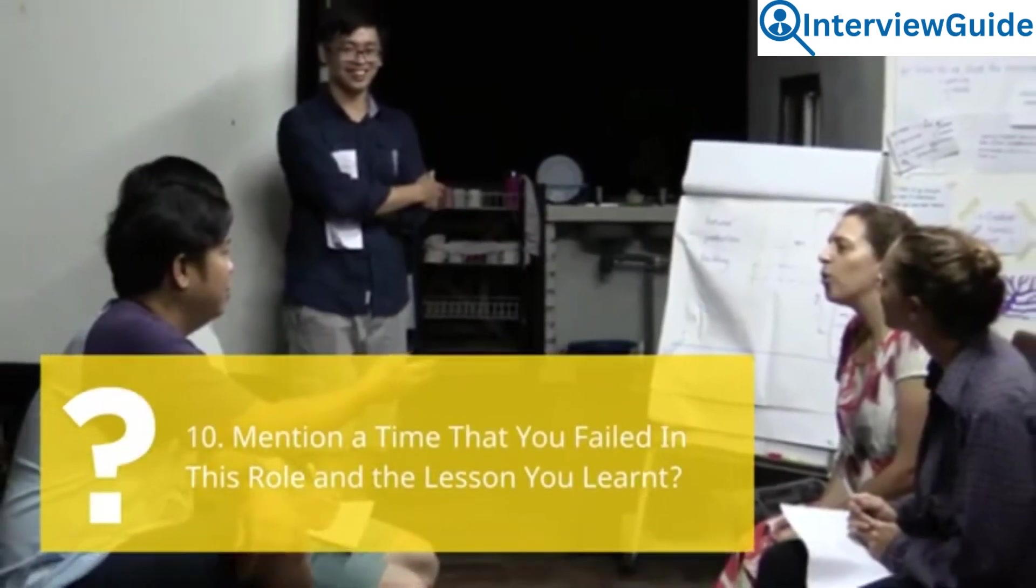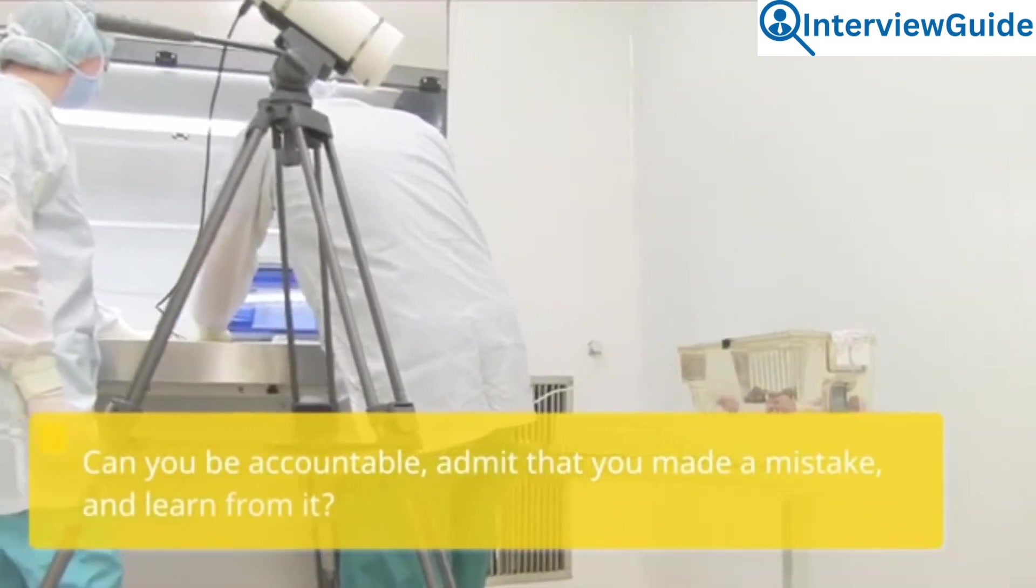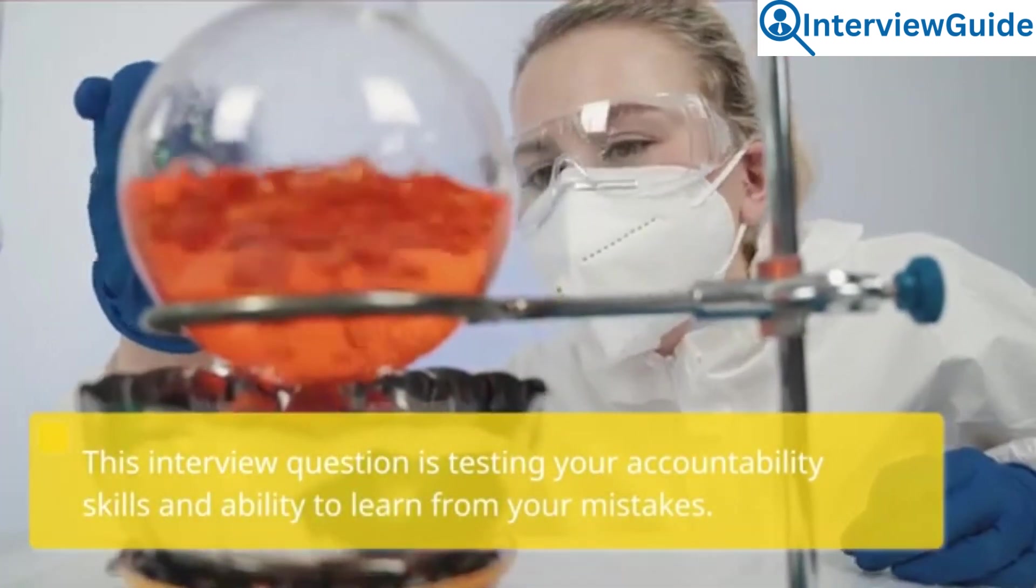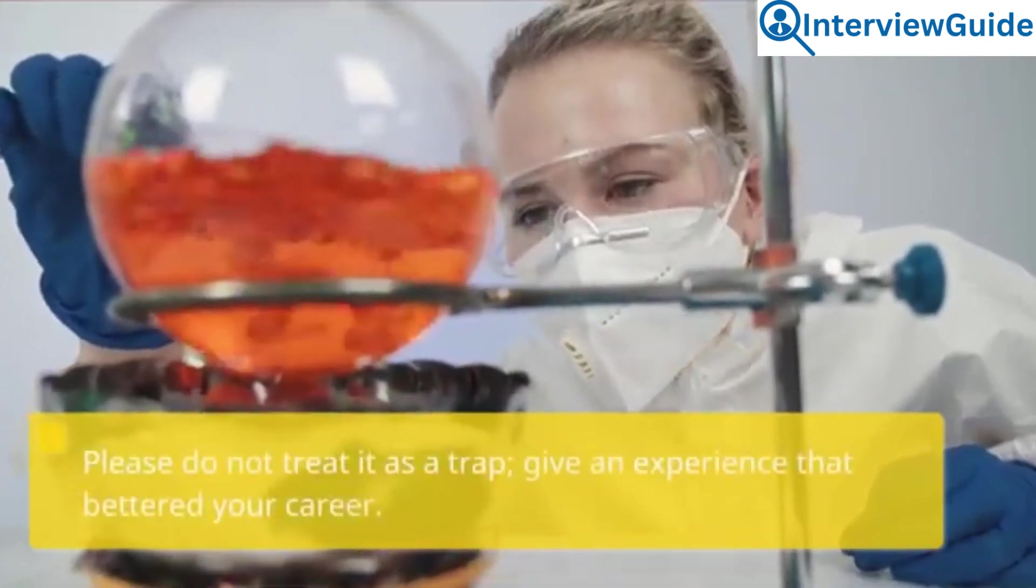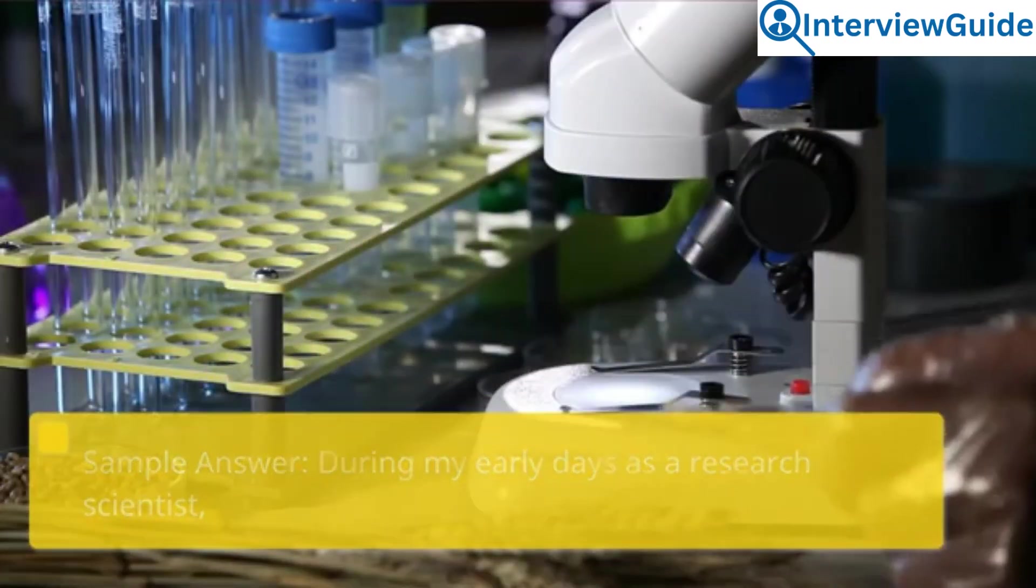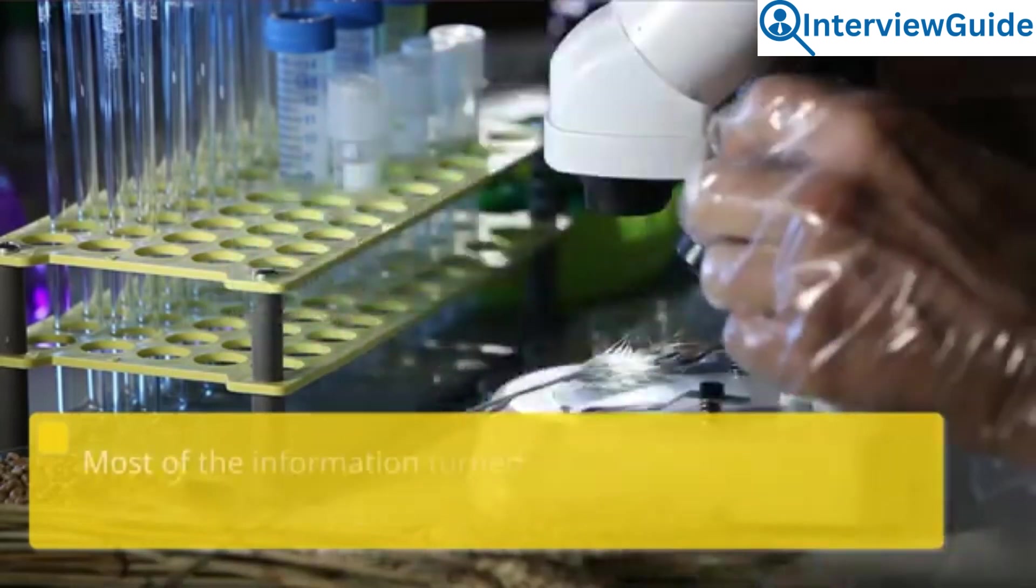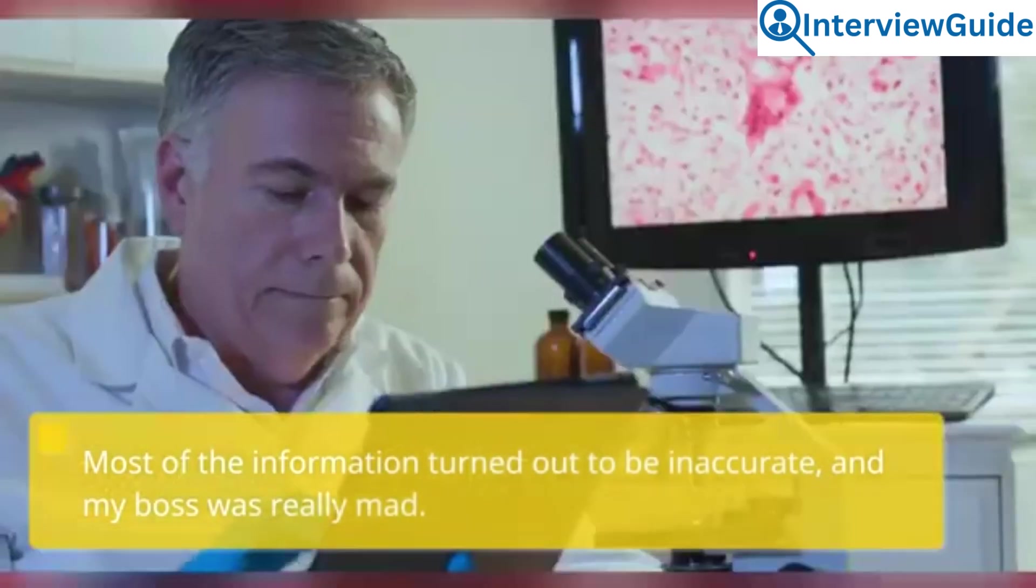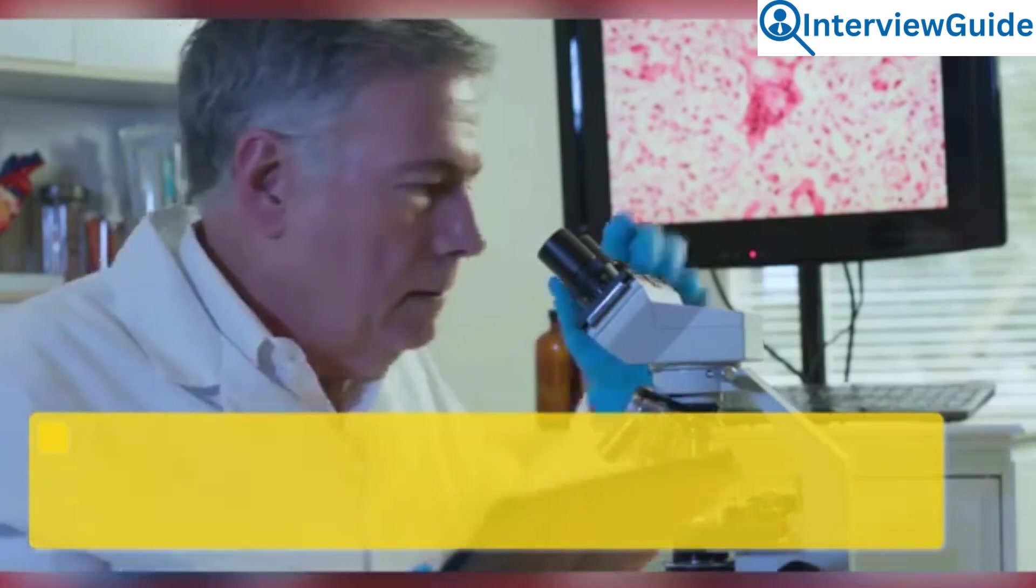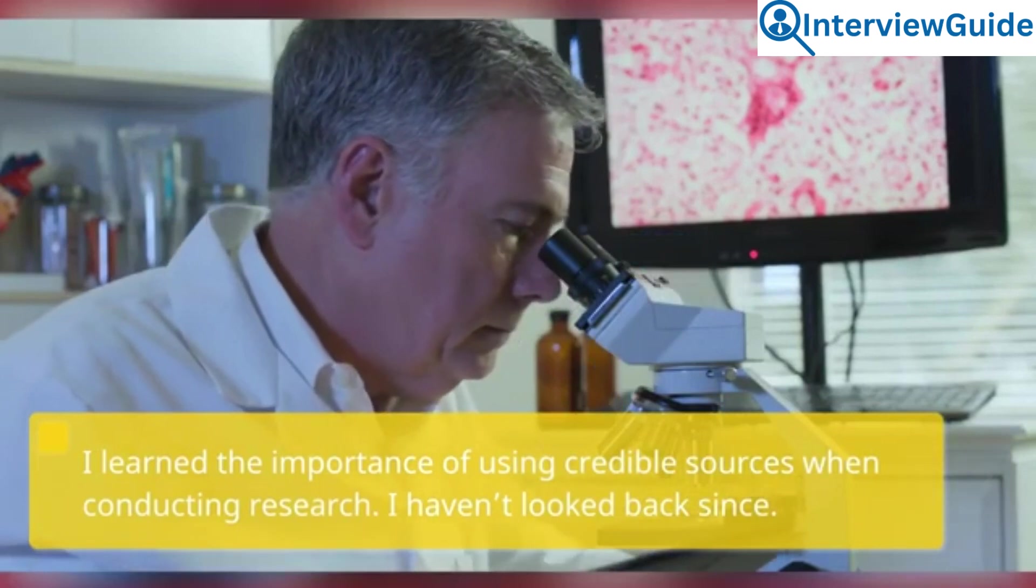Question 10: Mention a time that you failed in this role and the lesson you learned. Can you be accountable, admit that you made a mistake, and learn from it? This interview question is testing your accountability skills and ability to learn from your mistakes. Please do not treat it as a trap, give an experience that bettered your career. Sample answer: During my early days as a research scientist, I failed to use peer-reviewed articles and resorted to a common search engine. Most of the information turned out to be inaccurate, and my boss was really mad. However, I managed to convince him and redid the article, this time with peer-reviewed articles. I learned the importance of using credible sources when conducting research. I haven't looked back since.